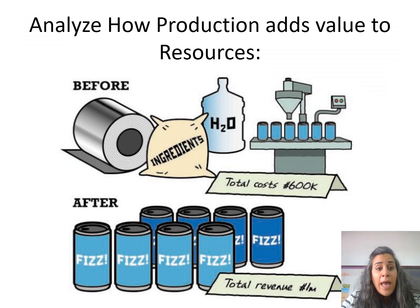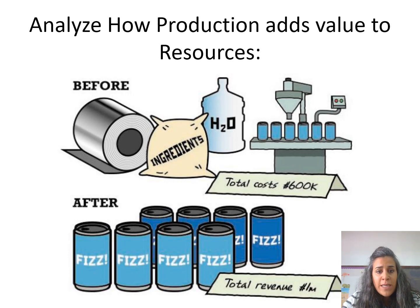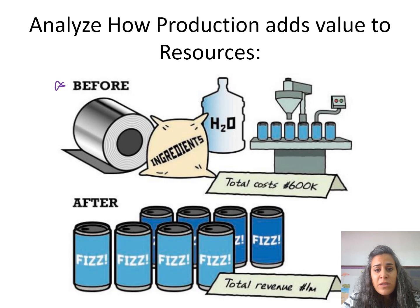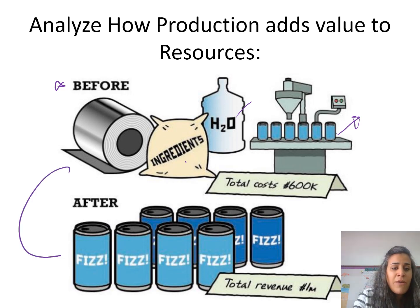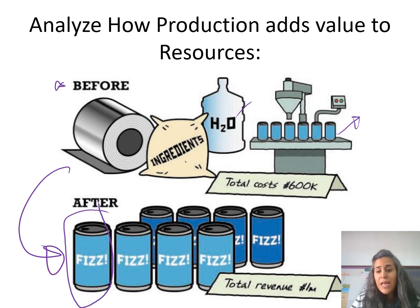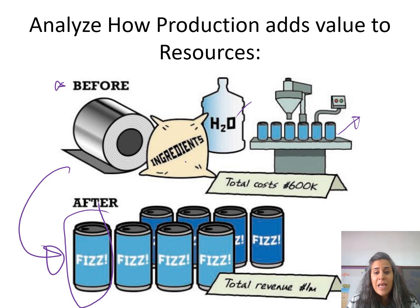Let's look at how resources add value to production. For example, here is the 'before': I have water, some ingredients, and capital. However, when we join them together, they produce my final product, which is a fizzy drink — the good at the end that I am capable of selling.